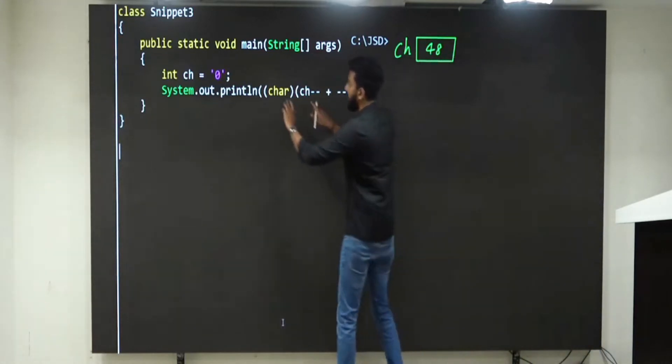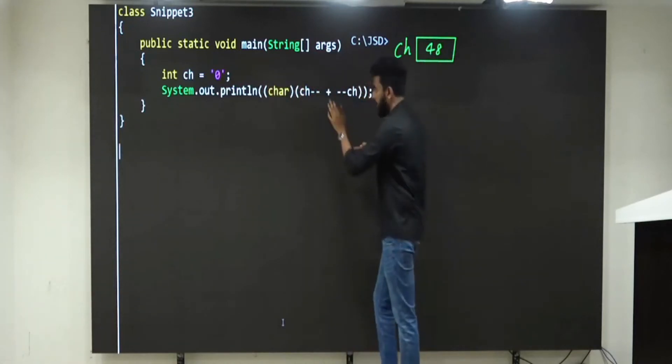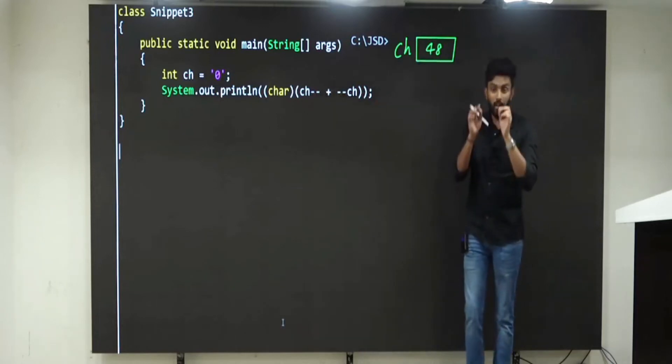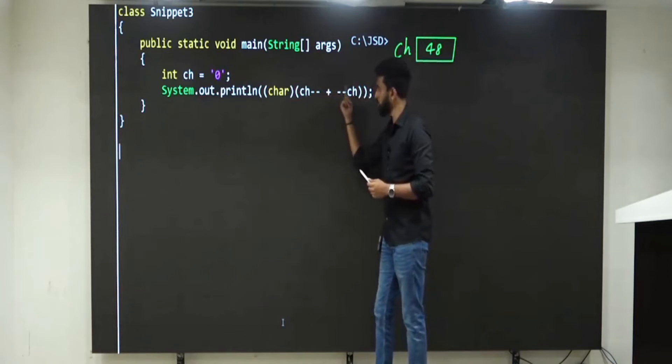First of all, this is typecasting. You ignore this. Parenthesis is there. Come inside. Minus minus, plus, minus minus. Decrementation is there, addition is there. Which should I do first? Decrementation. Very good. Which means this side also, this side also, both.